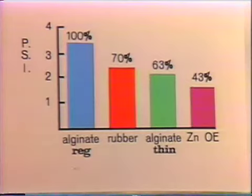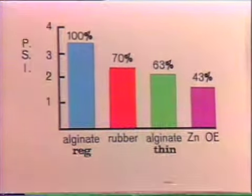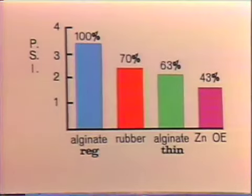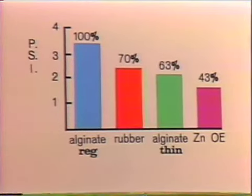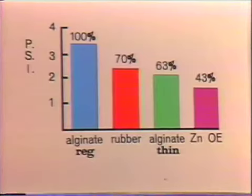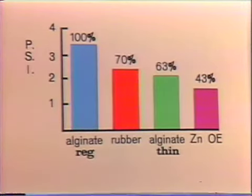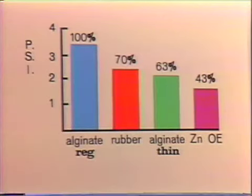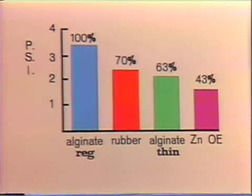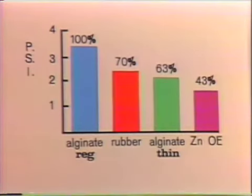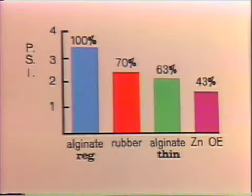He studied the different types of materials used for complete denture impressions. He found that alginate impression material, when mixed to a regular consistency, created the most pressure. Next was rubber base using light body rubber. When alginate was mixed to a thin consistency, less pressure was developed. The least pressures were developed when zinc oxide eugenol was used. It's interesting to note that the pressures involved were fairly low — 2 to 4 pounds per square inch.